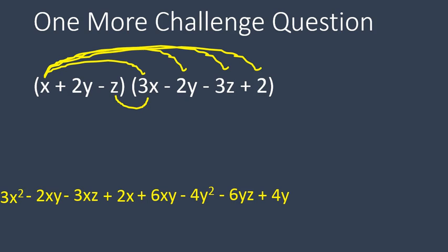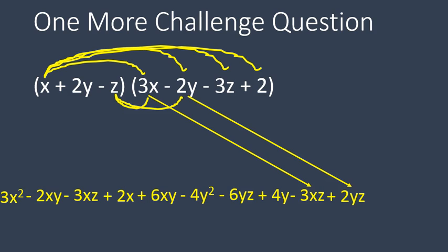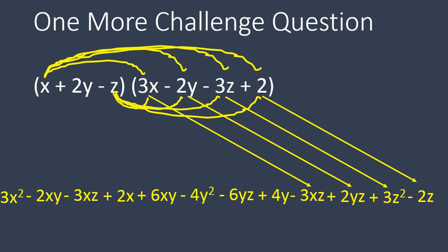So the third term is z, and I'm going to multiply that times, or -z, I should say. -z and I'm going to multiply that times each term inside of the second set of parentheses. -z times 3x gives us -3xz. -z times -2y gives me a positive 2yz. -z times -3z gives me a positive 3z². And the final multiplication I'm doing, -z times 2 gives me -2z. Wow!